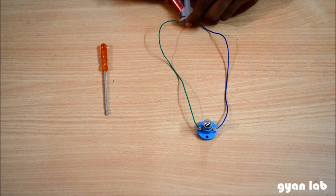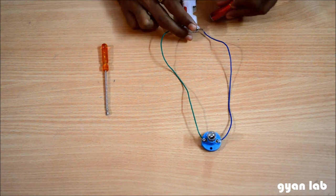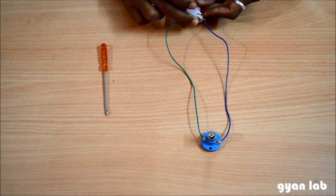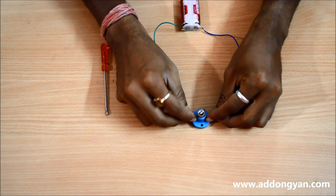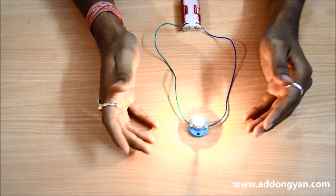So I am going to put the two batteries in. If I just put one battery, you see that the bulb is not glowing. So let's try and put the other battery as well. And voila, the bulb is glowing.